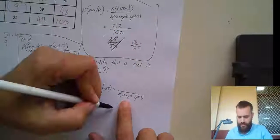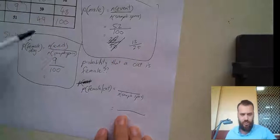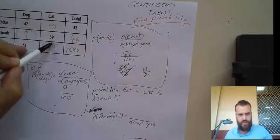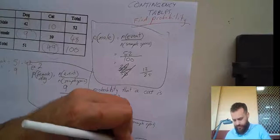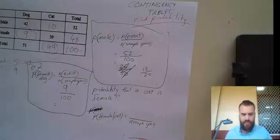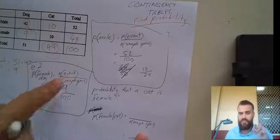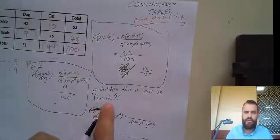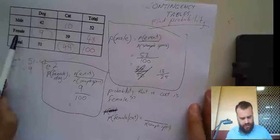Now, the sample space in this case is all of the cats. So, there are 49 cats. And then the number of different ways it can happen, the event, the event that we're looking for is a female, a female cat. 39 females.